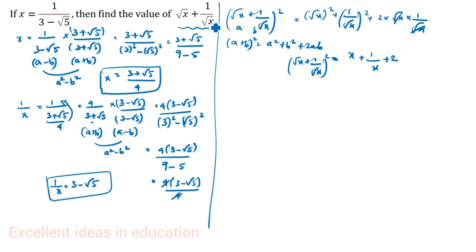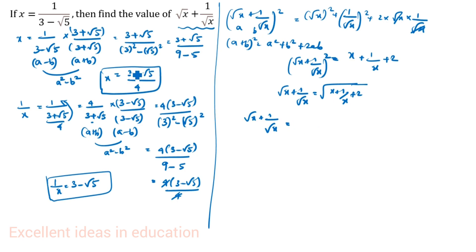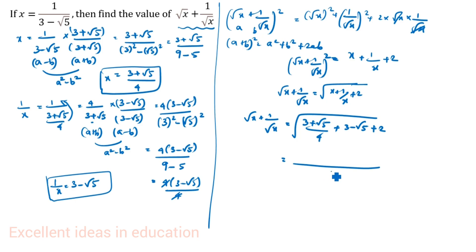But we need only root x plus 1 by root x, so root x plus 1 by root x equals root of (x plus 1 by x plus 2). We substitute: x is 3 plus root 5 by 4, and 1 by x is 3 minus root 5. Taking common denominator 4: 3 plus root 5 plus 4 times (3 minus root 5) gives 3 plus root 5 plus 12 minus 4 root 5. So 3 plus 12 is 15, plus 8 is 23.